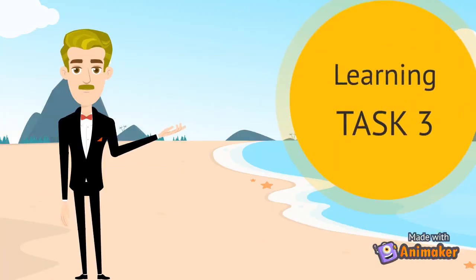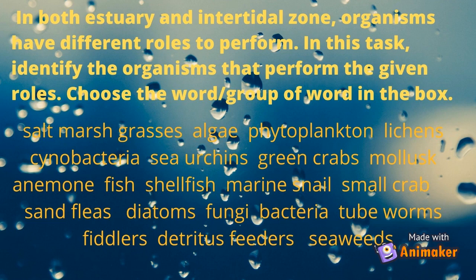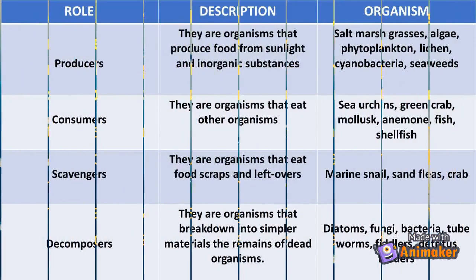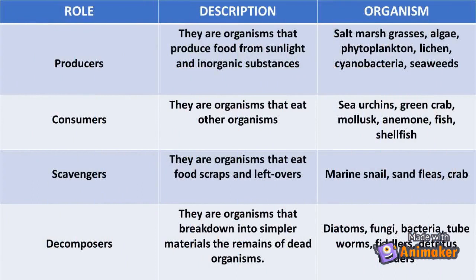Let's do learning task number three. In both estuary and intertidal zone, organisms have different roles to perform. Identify the organisms that perform the given roles and choose the word or group of words from the box. Producers: they are organisms that produce food from sunlight and inorganic substances. Examples: salt marsh, grasses, algae, phytoplankton, lichen, cyanobacteria, seaweeds.